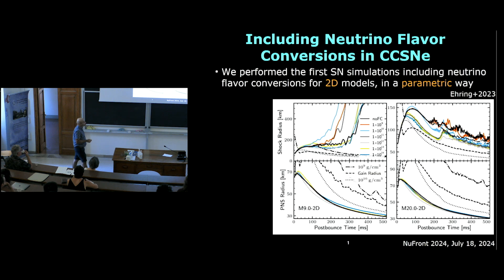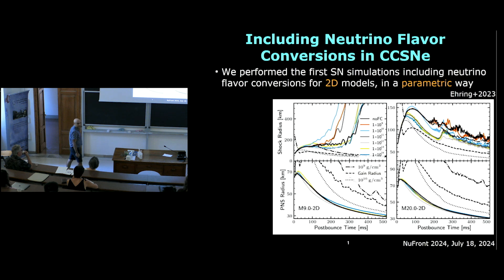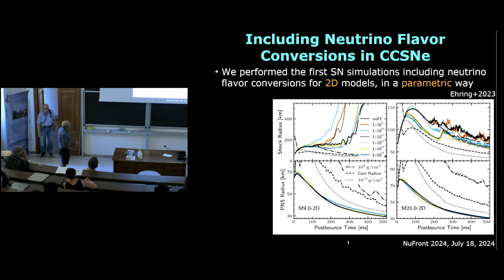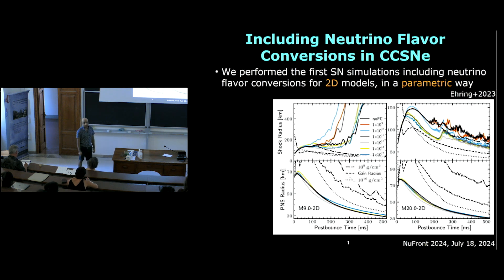The colorful curves show simulations in which flavor conversions are implemented. For example, the orange curve labeled 10^9 means that for this model we assume flavor conversion exists only for densities below 10^9 g/cm³. For the exploding low-mass model, flavor conversion seems to help the supernova explosion — comparing the 10^9 and 10^10 models with the black curve, the explosion occurs much faster.